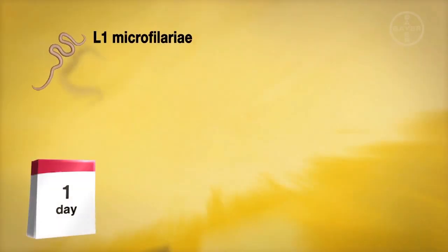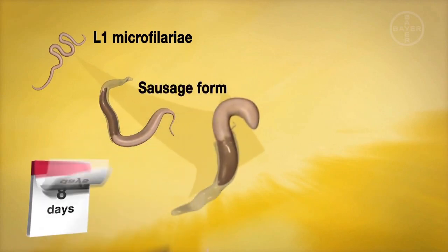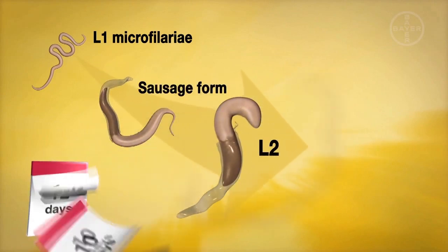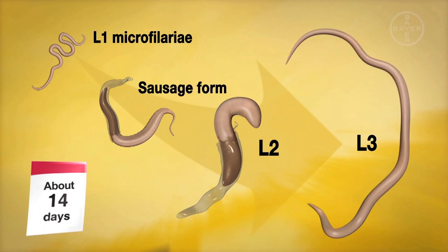Inside the insect, over a period of about 14 days, the L1 larvae develop into the infective L3 stage larvae by molting twice.